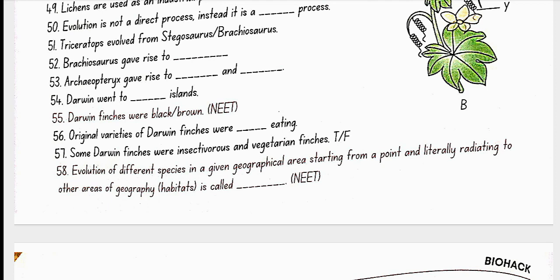Triceratops evolved from Stegosaurus. This is present in the NCERT diagram and this is very important. Brachiosaurus gave rise to Tyrannosaurus. Archupaterics gave rise to Crocodilin and Pterodon. Darwin went to Galapagos Island. Darwin finches were black. Original varieties of Darwin finches were insectivorous and vegetarian. Evolution of different species in a given geographical area, starting from a point and literally radiating to other areas of geography or habitats, is called Adaptive Radiation.